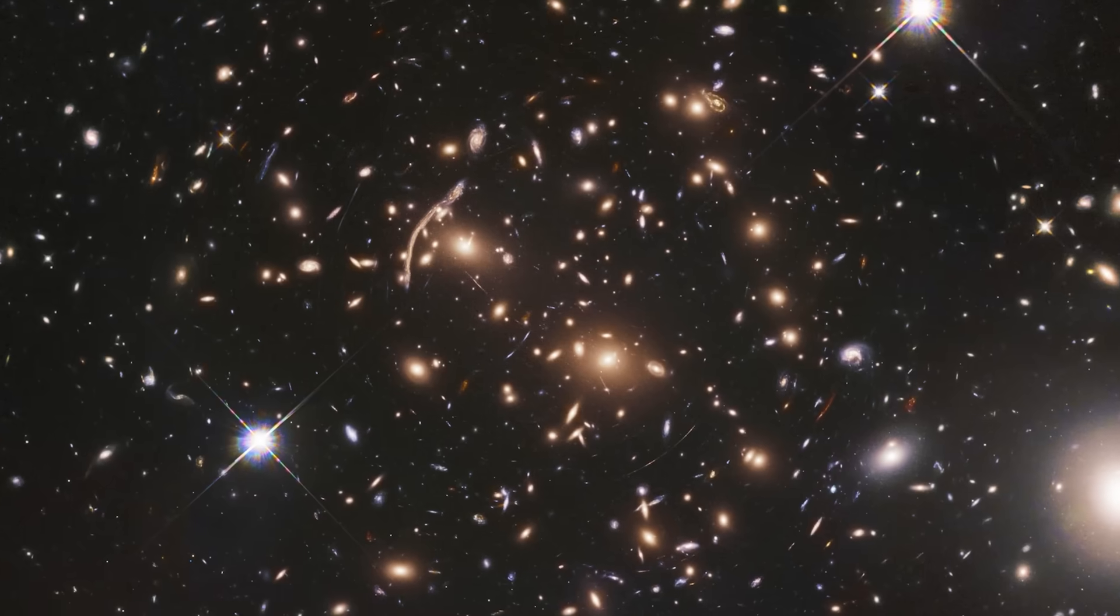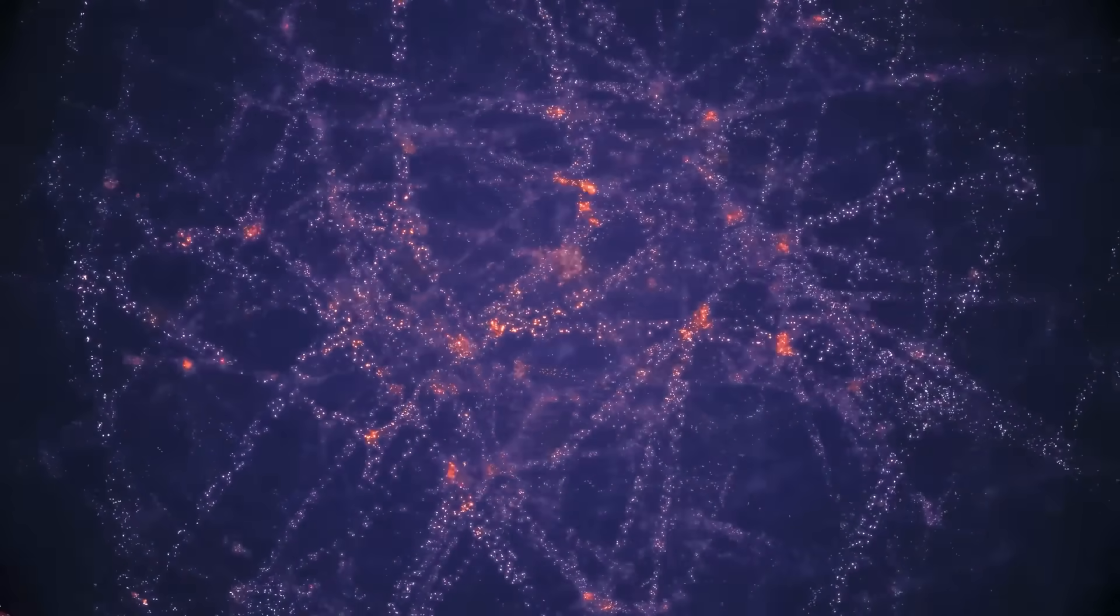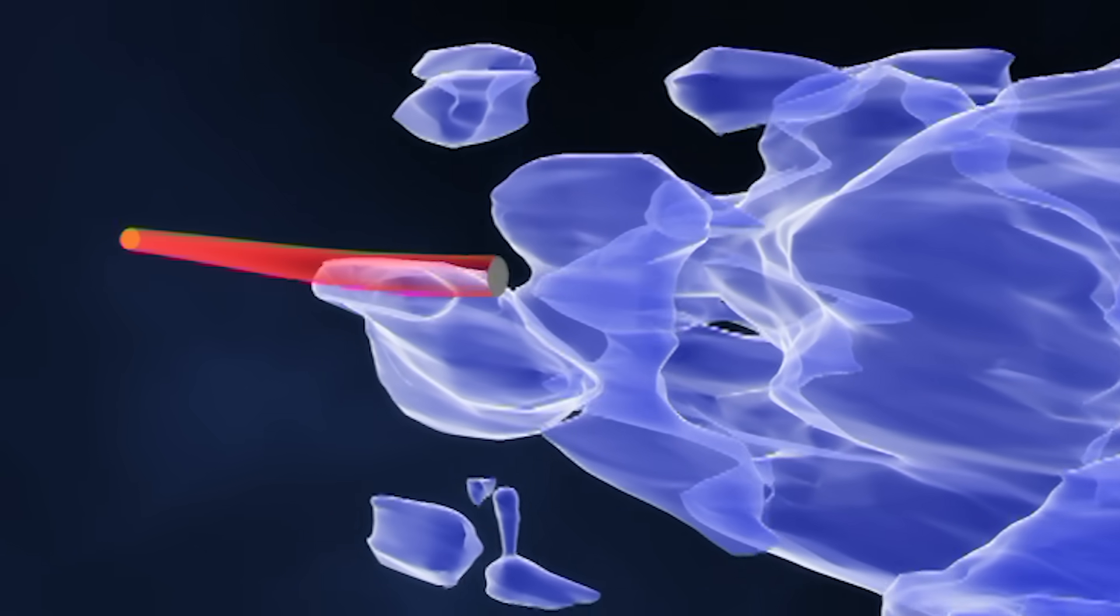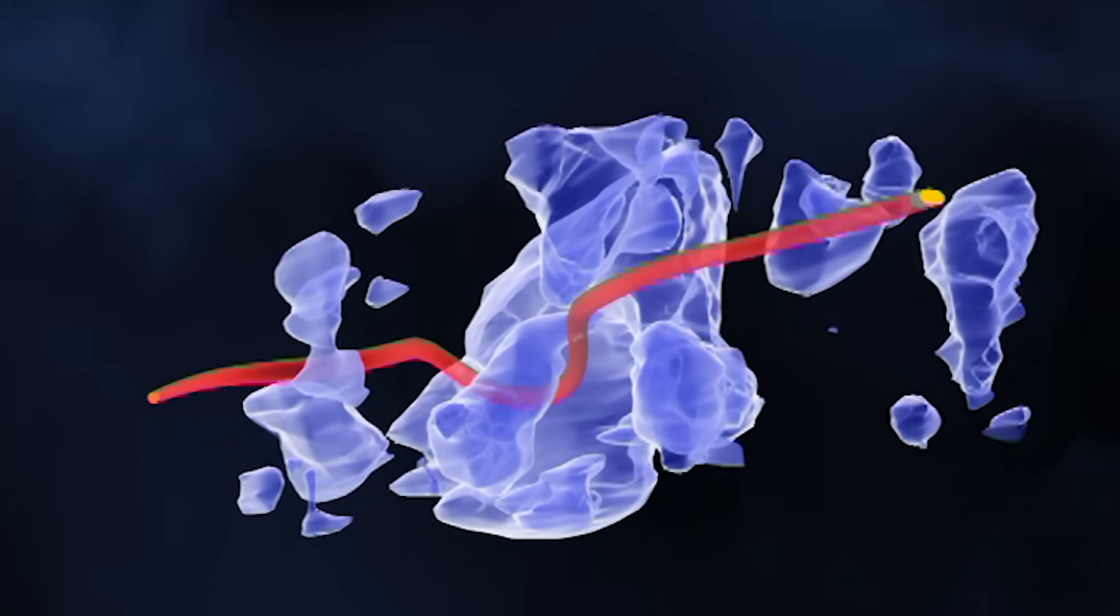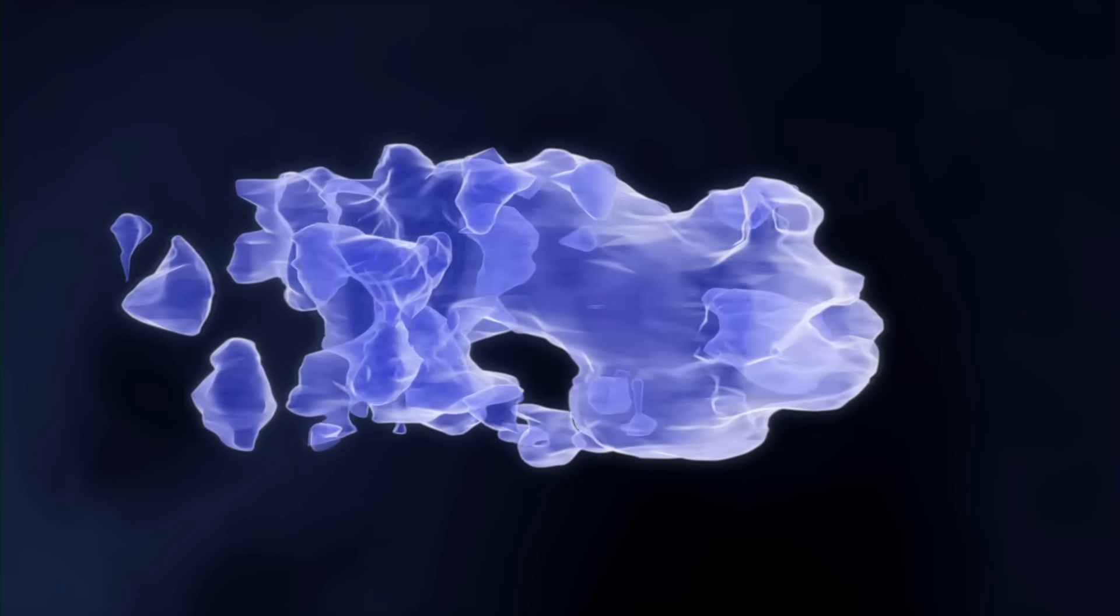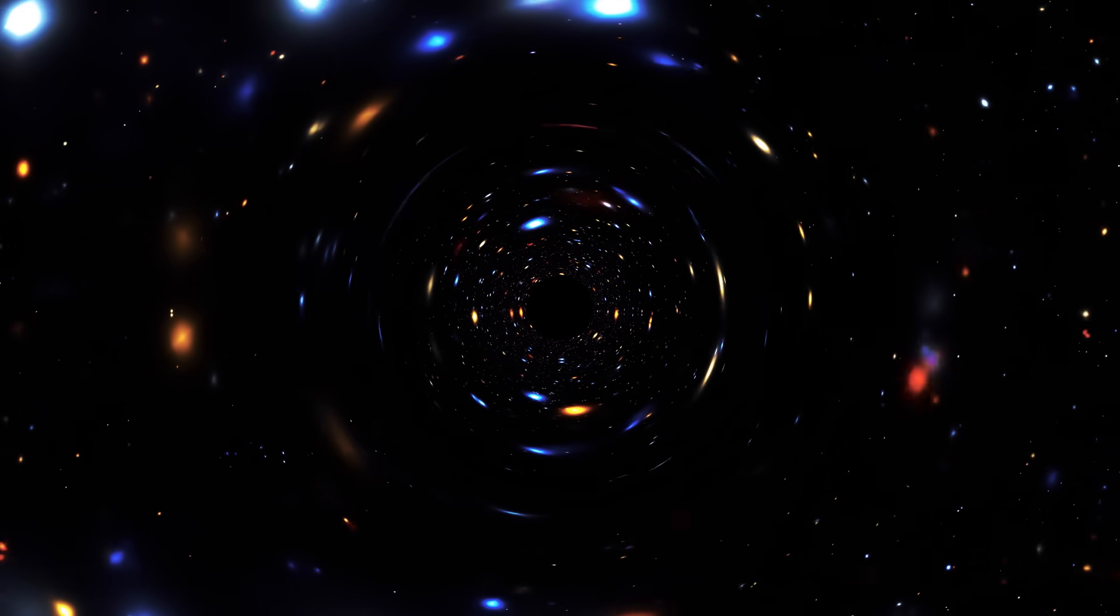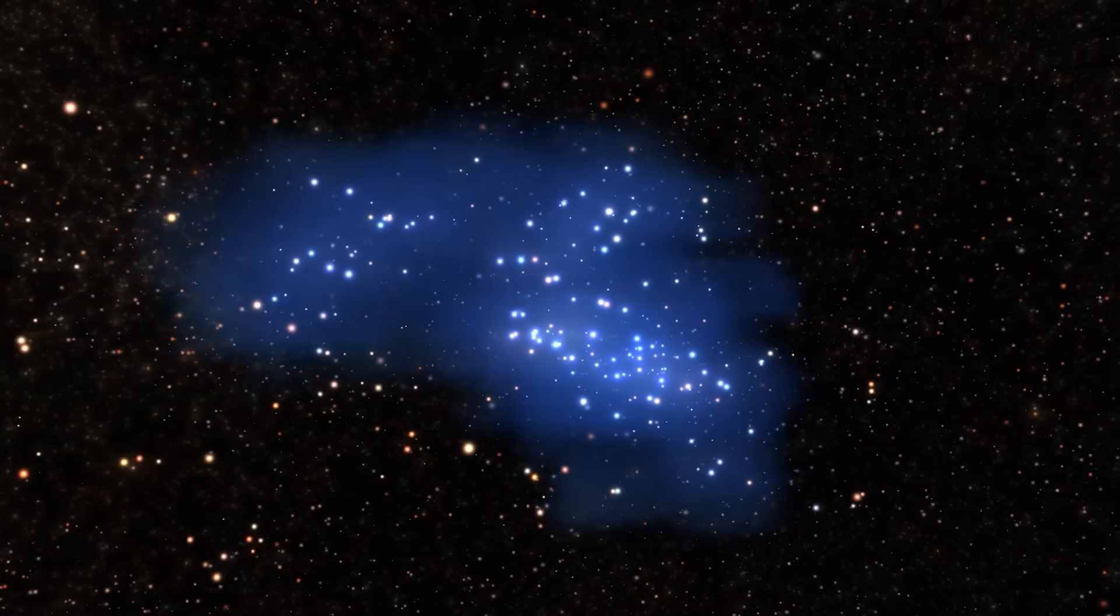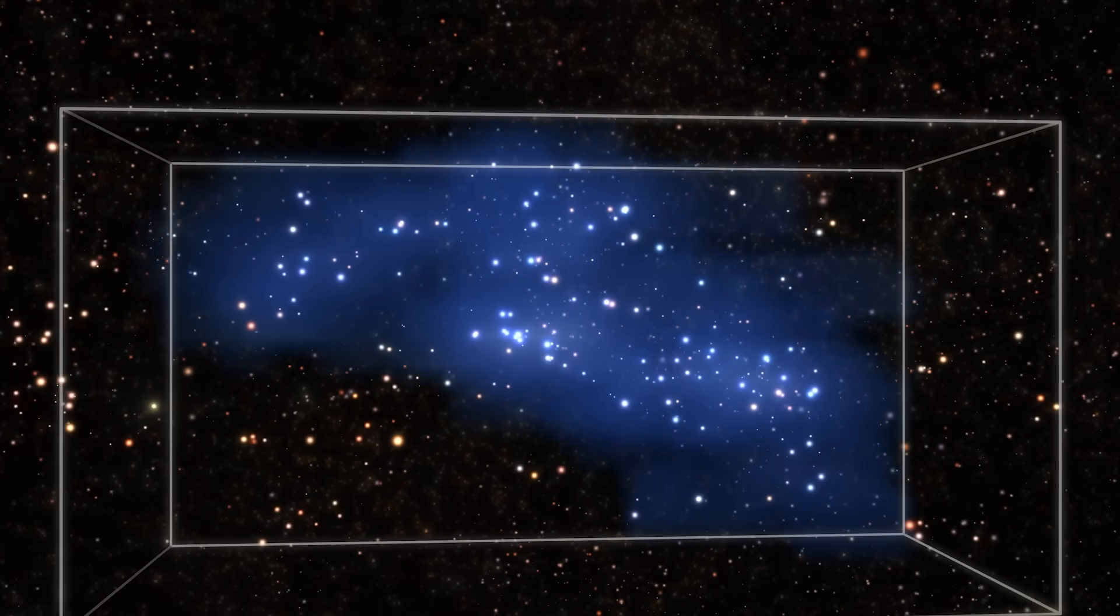The second reason why superstructures like Queepu are so important has to do with gravitational lensing. Because of their sheer mass, these structures act like giant cosmic magnifying glasses. Their intense gravity bends and distorts the light coming from galaxies far behind them, stretching and magnifying these distant objects in a phenomenon known as gravitational lensing. This effect can be observed across vast areas of the sky. But there's a catch. If we don't know exactly how big or heavy a superstructure is, the lensing can lead to false measurements. It can make galaxies look like they're in the wrong place, or make them appear bigger or more stretched than they really are. So, to get accurate information about things like galaxy distances or how matter is spread out in space, we need to understand these giant structures better.